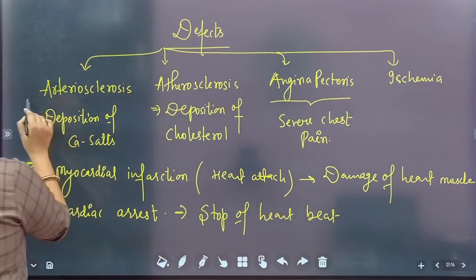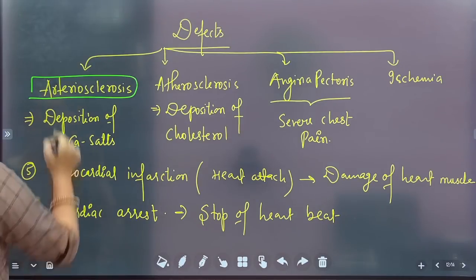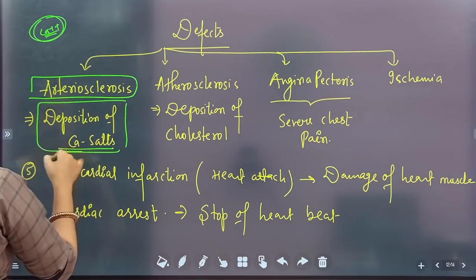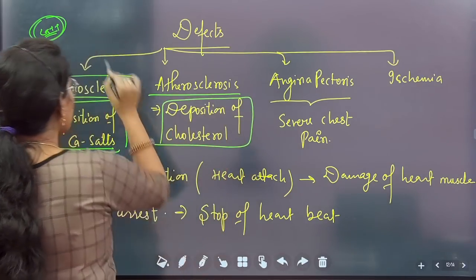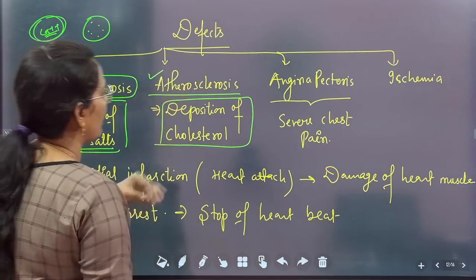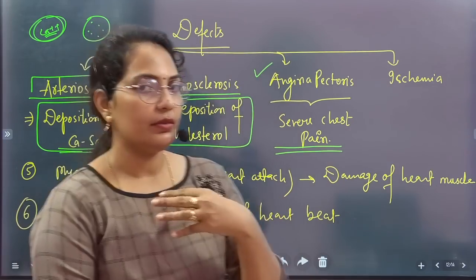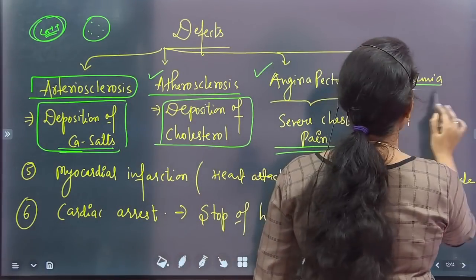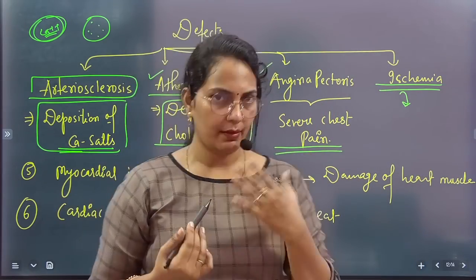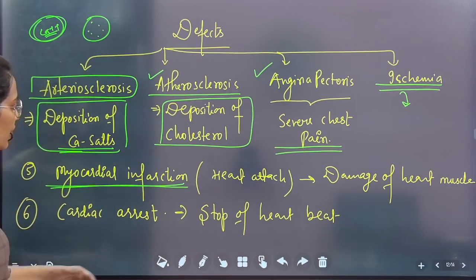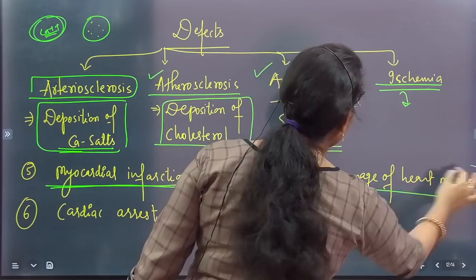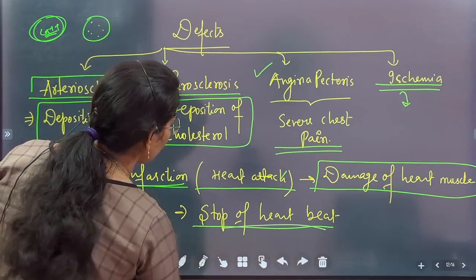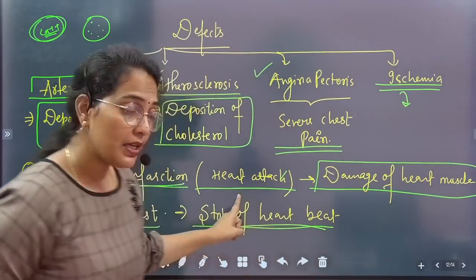Now let's look at heart defects. Arteriosclerosis involves calcium salt deposition in the lumen of coronary arteries, narrowing the lumen. Atherosclerosis involves deposition of cholesterol and fat in the lumen. Angina pectoris is severe chest pain when the heart does not receive sufficient oxygen. Ischemia is also due to insufficient oxygen supply. Myocardial infarction is also called a heart attack — there is sudden damage to the heart muscle. A person can survive a heart attack.